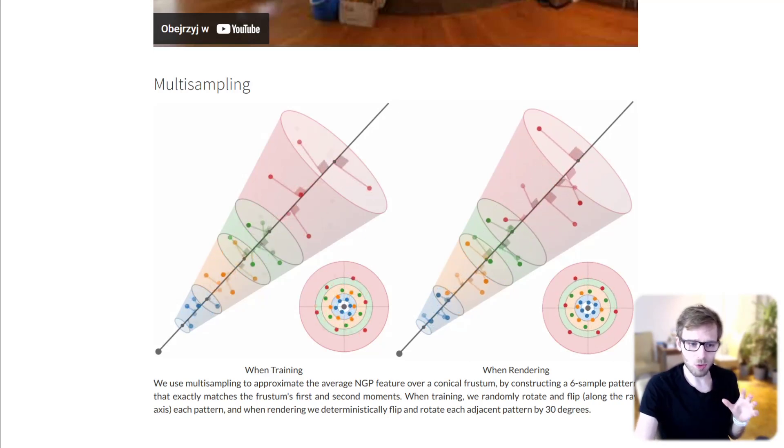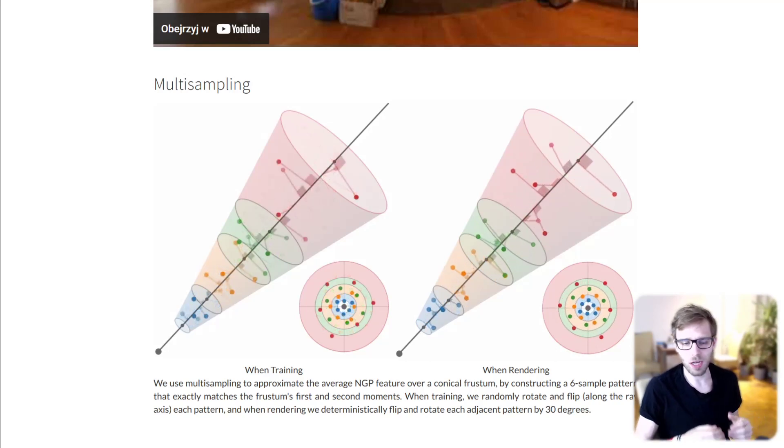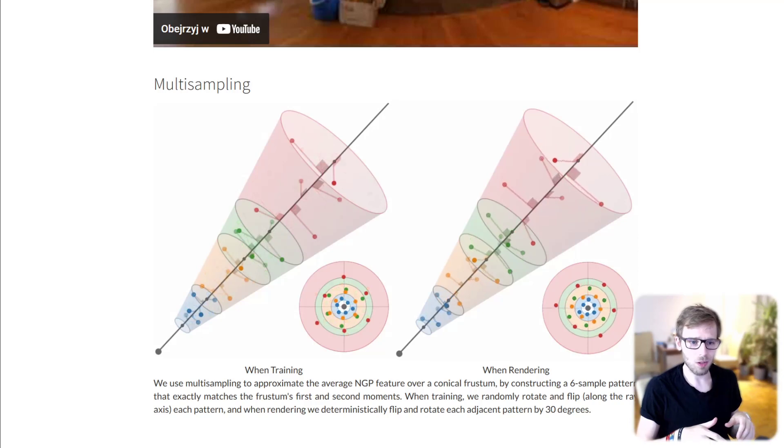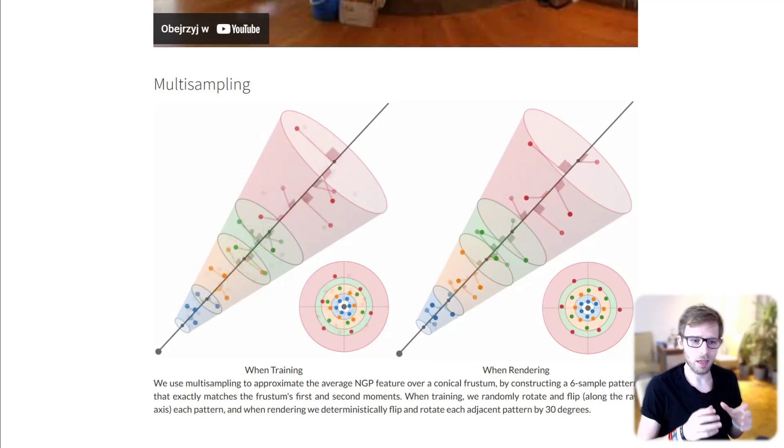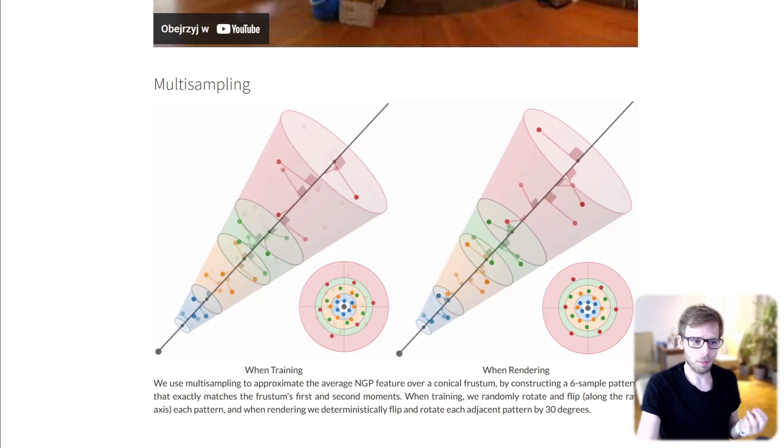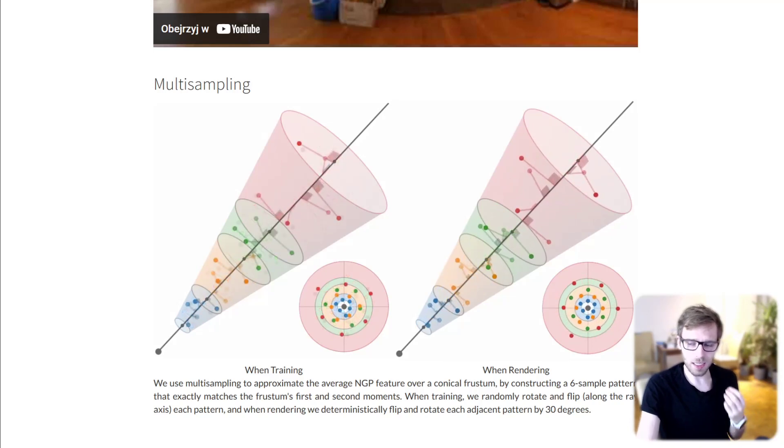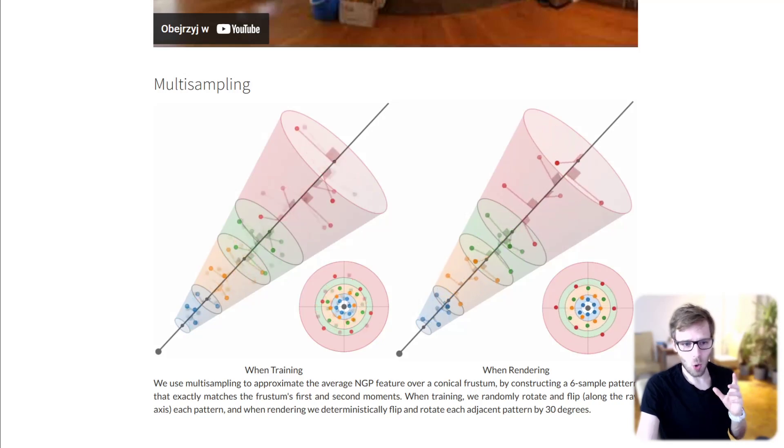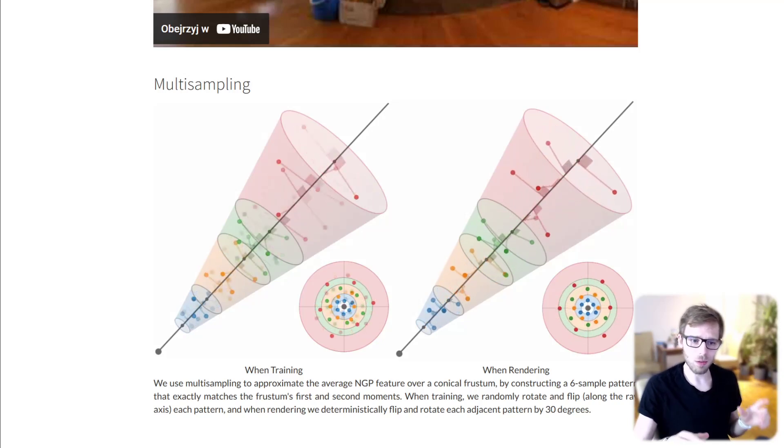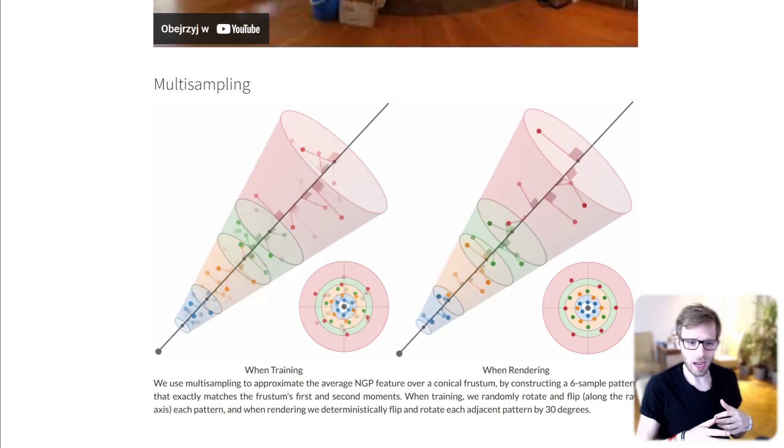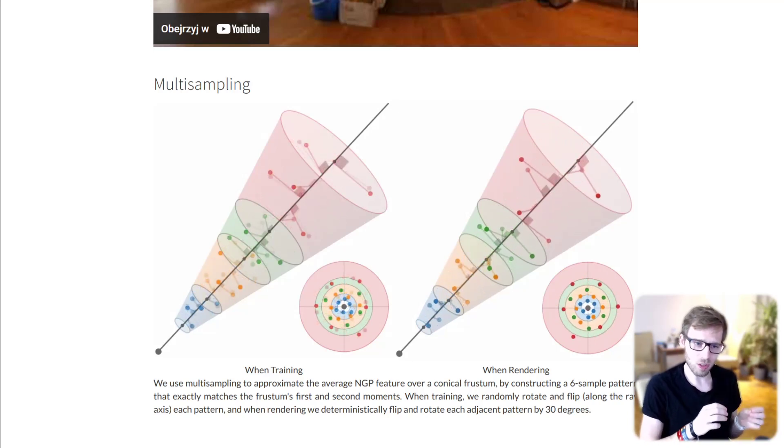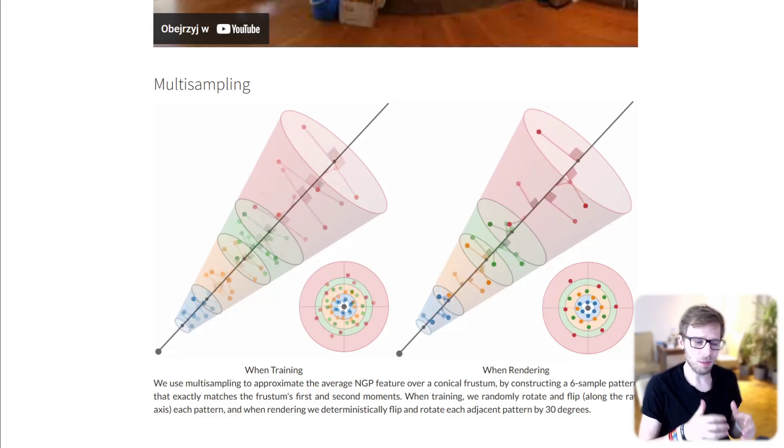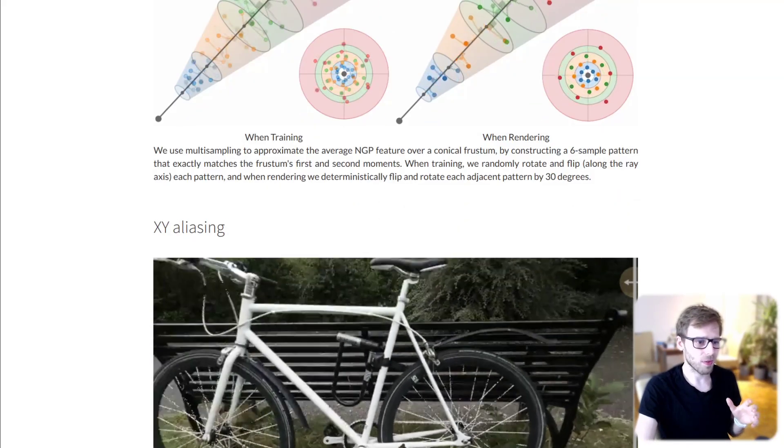Zip-NeRF uses multi-sampling to approximate the average NGP features over a canonical frustum. This is done by constructing a six-sample pattern that exactly matches the frustum's first and second moments. When training, the pattern is randomly rotated and flipped along the ray axis, and when rendering, each adjacent pattern is deterministically flipped and rotated by 30 degrees.